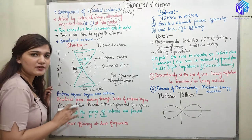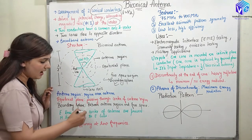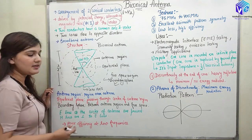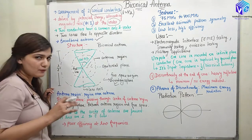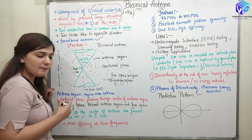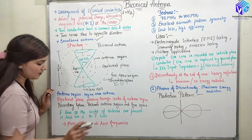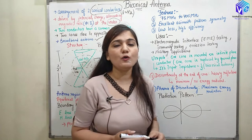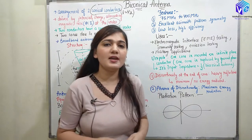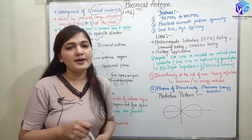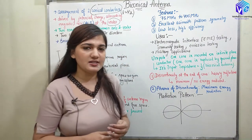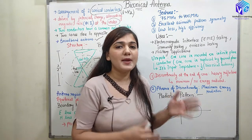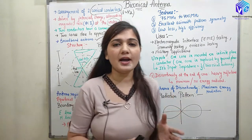The electric field lines are present at the center of the antenna, and the magnetic field lines are perpendicular to the electric field lines. If I want to operate it at the lower frequency it is going to give me very poor efficiency, so I want to make it work at the higher frequency.